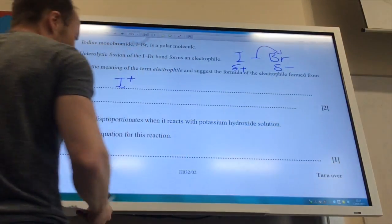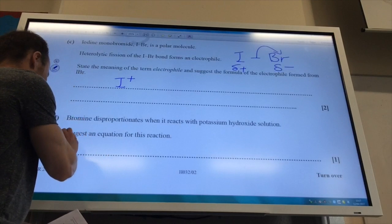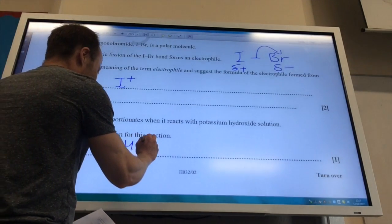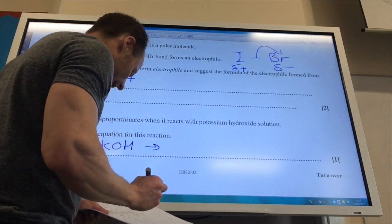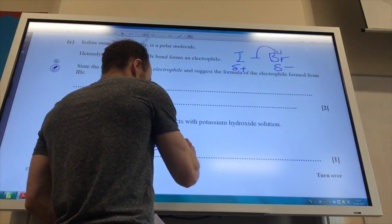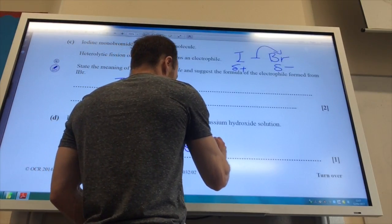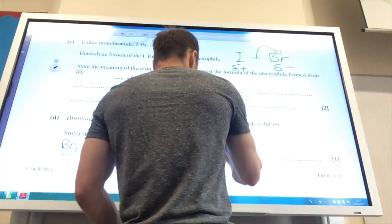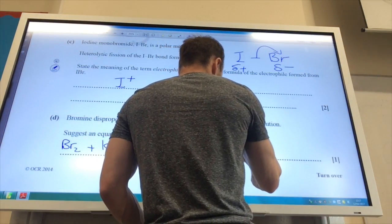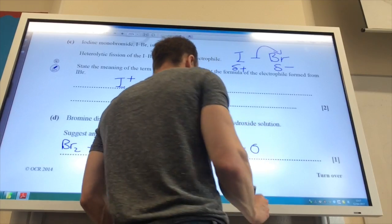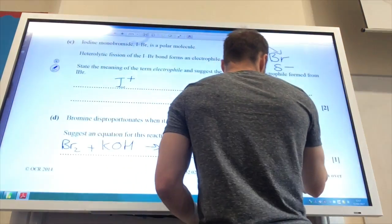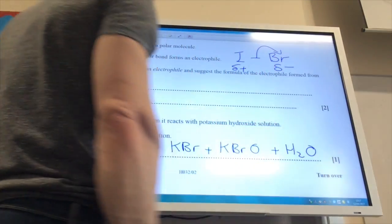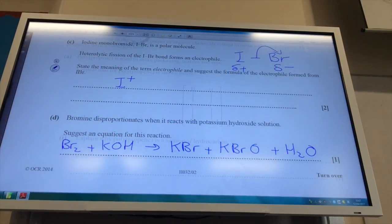Bromine disproportionates when it reacts with potassium hydroxide solution. Suggest a reaction for this. Well, you have done a similar reaction with chlorine, of course. So you basically just substitute in bromine for chlorine to give you potassium bromide plus water like so.